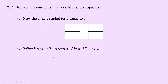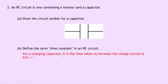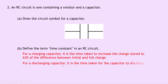Part B asks to define the term time constant in an RC circuit. We can define this in two ways. For a charging capacitor, it is the time taken to increase the charge storage to 63% of the difference between initial and full charge. For a discharging capacitor, the time constant is the time taken for the capacitor to discharge to 37% of its initial charge.